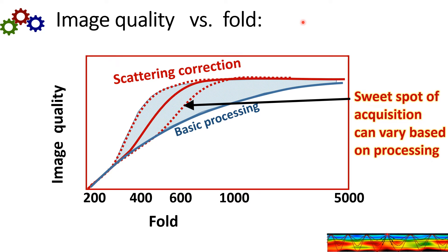So you need some minimal fold for the scattering correction. But massive fold may not be necessary. And this inflection point here is the sweet spot of acquisition. And it will vary, of course, based on the type of scattering that you have.